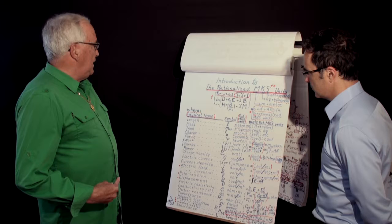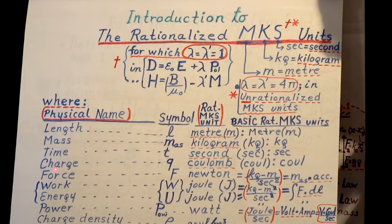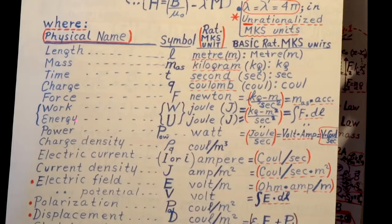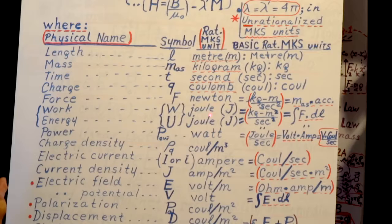Time T, charge Q, the electric charge. You have the force F, work is W as far as I am concerned. Energy is often used U, but work, energy, it's the same unit really. So we call it Joules, but energy, you have different kinds of energy.